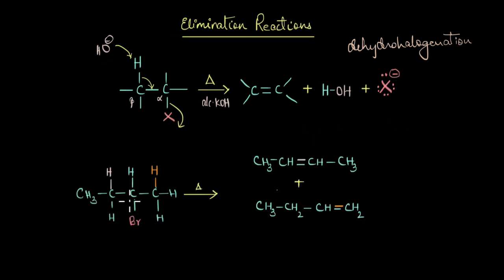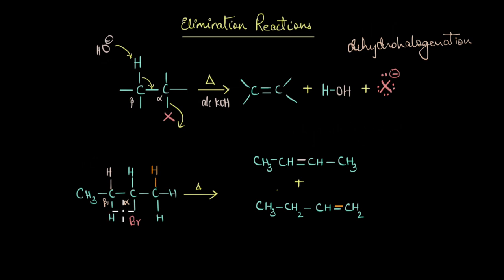Here we have the alpha carbon, where the carbon atom is directly attached to the bromine atom. We have two different beta carbon atoms. In one beta carbon, we have a methyl group and two hydrogen atoms attached, and in the other beta carbon, we have all three hydrogen atoms attached to it.